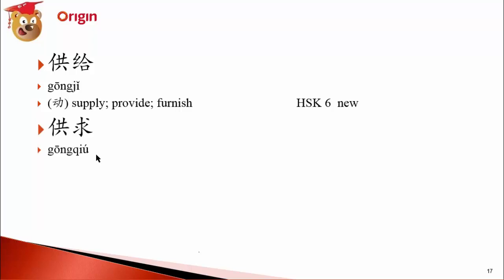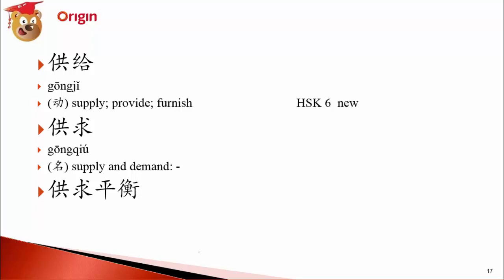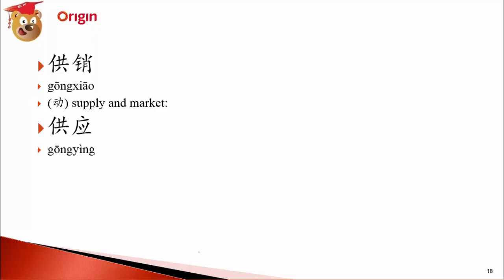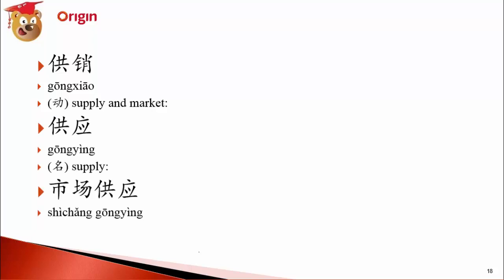供求 (gōng qiú) — supply and demand. If you study economics, micro or macro, 供求. 供求平衡 (gōng qiú pínghéng) — the balance between supply and demand, the core of economics study. 供销 — supply and sale, supply and market. 供应 — to supply; 市场供应 — market supply.